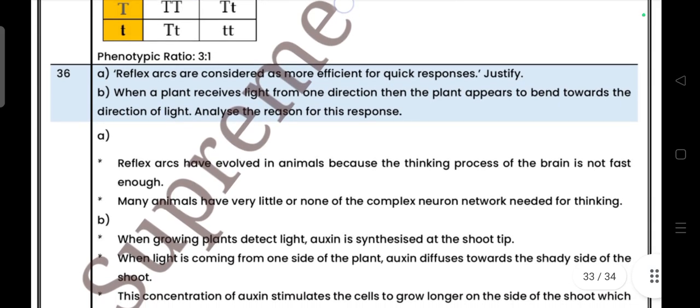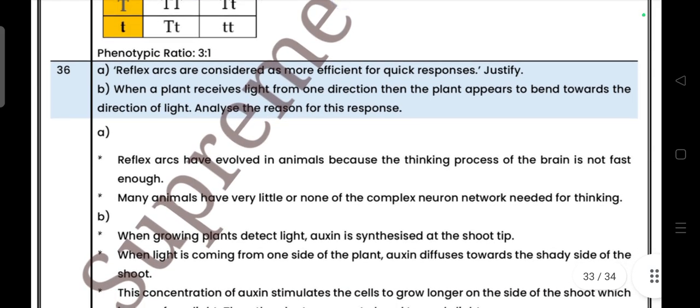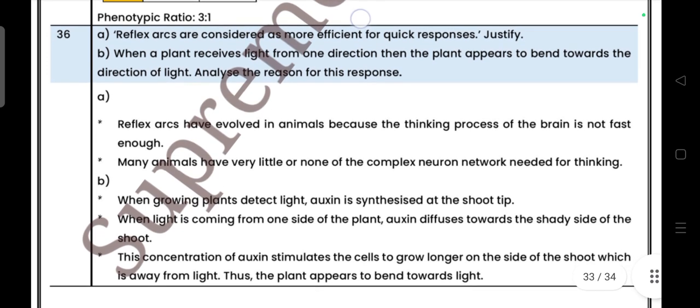Next one: Reflexes are considered as more efficient for quick response. Justify. When a plant receives light from one direction, then the plant appears to bend towards the direction of light. Analyze the reason of this response.